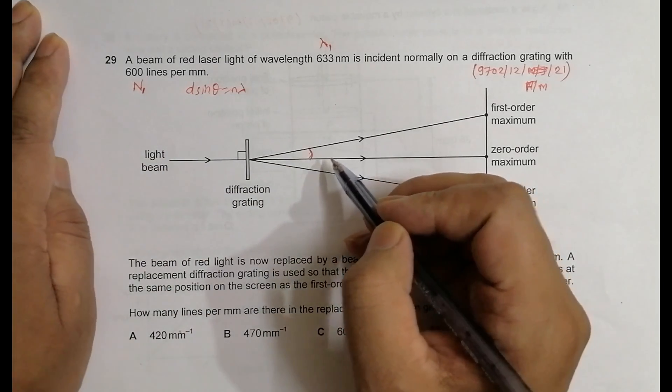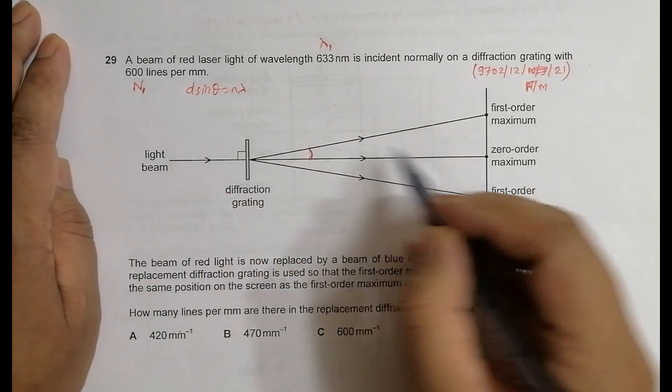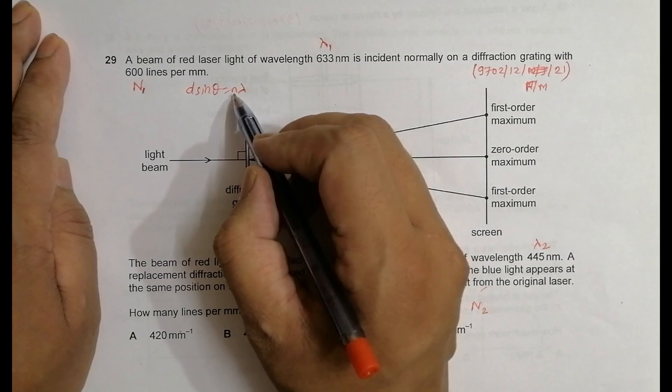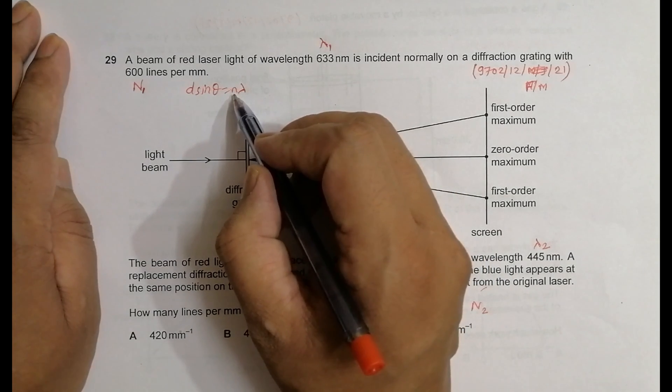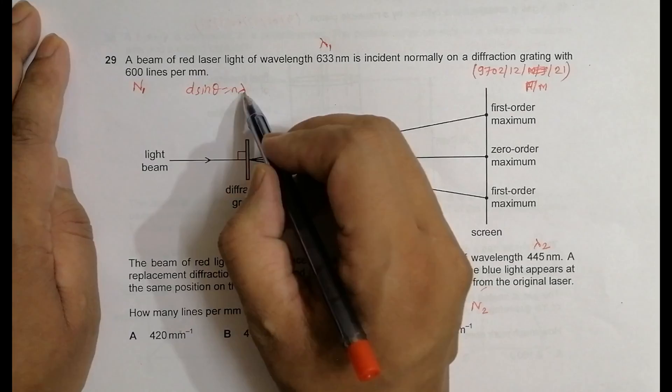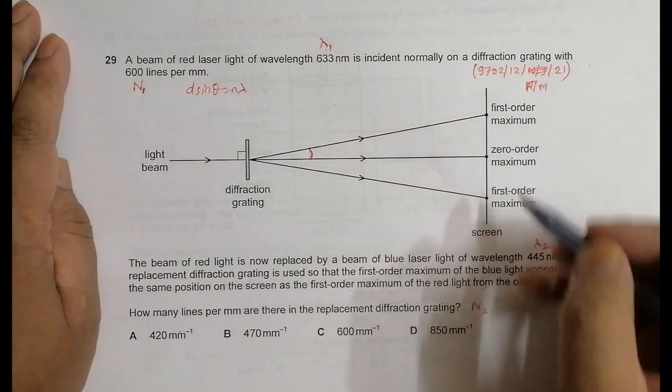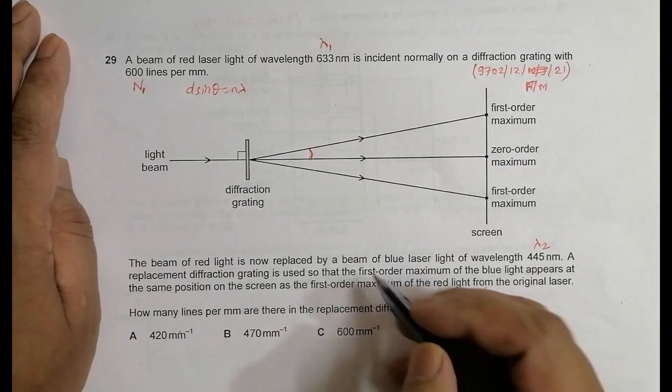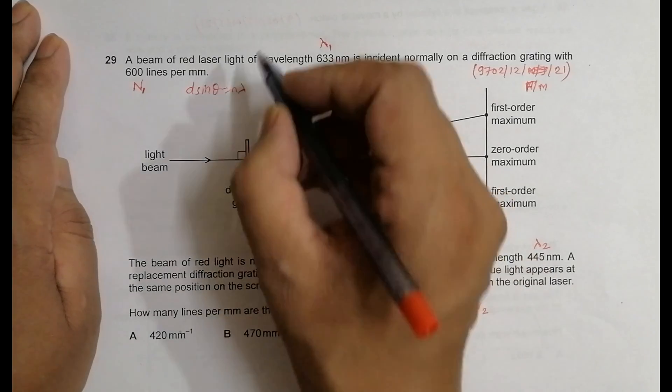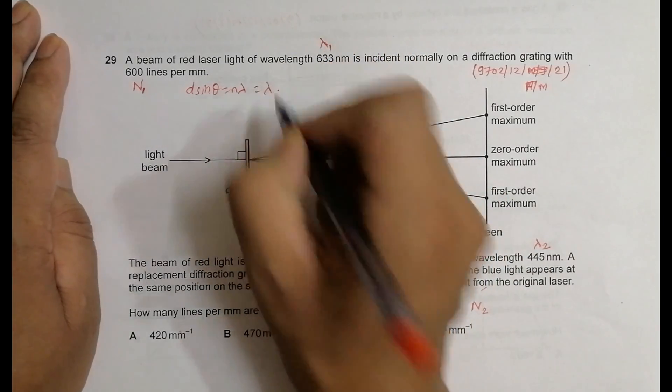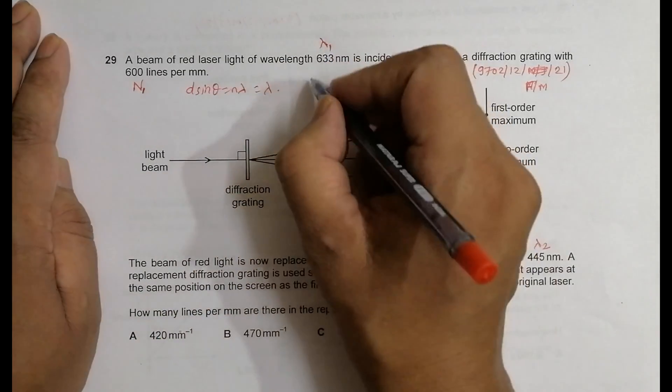Since we are talking here only of the first order, we can say that n equals 1, so it should be lambda. Now this d also changes to d equals 1 by n, so our equation is 1 by n sine theta equals lambda.